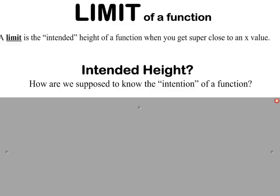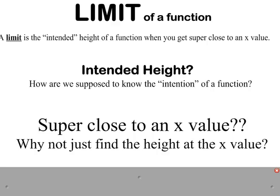What do I mean by intended height? Well, sometimes a function has a hole in it. And we want to know, well, if the hole wasn't there, if it was filled in, how high would the graph be? That might be the intended height. What do I mean by super close to an x value? Why not just use an x value? Well, sometimes a function has numbers that are excluded or a domain that is restricted. For example, maybe at x equals 2, the function makes us divide by 0. If that's the case, x equals 2 is not in the domain and we cannot use it to see how high the function is. So what we do is we look at values that are super close to that value.